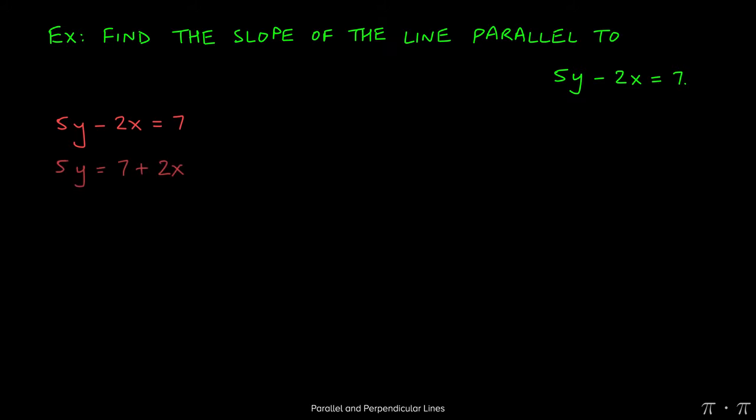We start by adding the 2x over to the other side so that we can start to isolate the y. And at this stage, the only thing that needs to get rid of is 5.